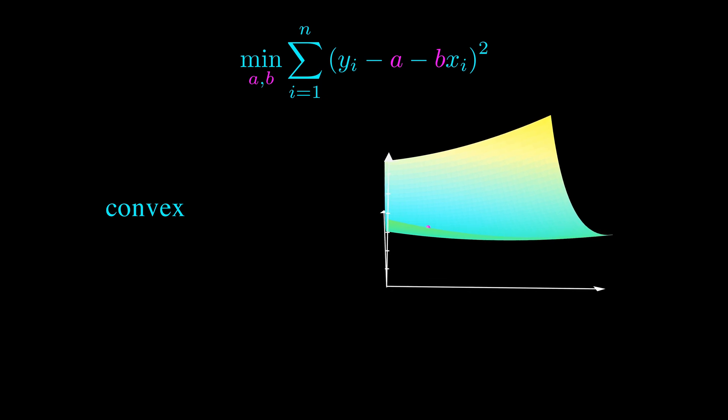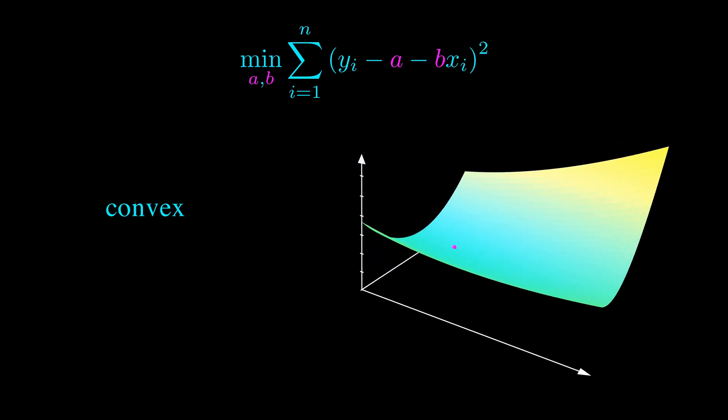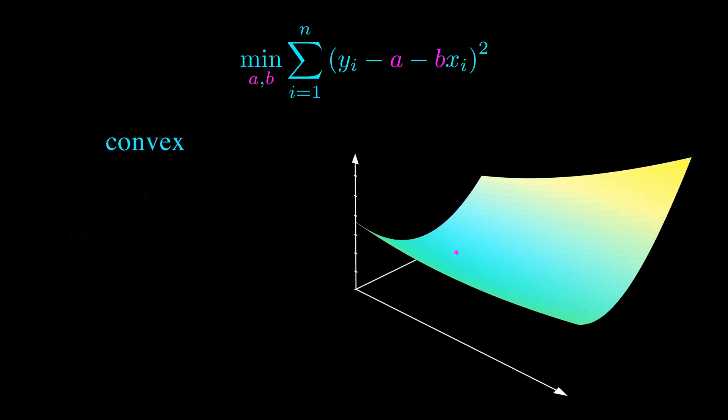Convex functions are important because locally optimal points are also globally optimal. When we minimize a convex function, we need to find a point where this derivative is zero. This point will be the optimal solution for our minimization problem. Note that this is specific for minimization problems. If we were to maximize the objective, the point where the derivative is zero will not be the optimal solution.